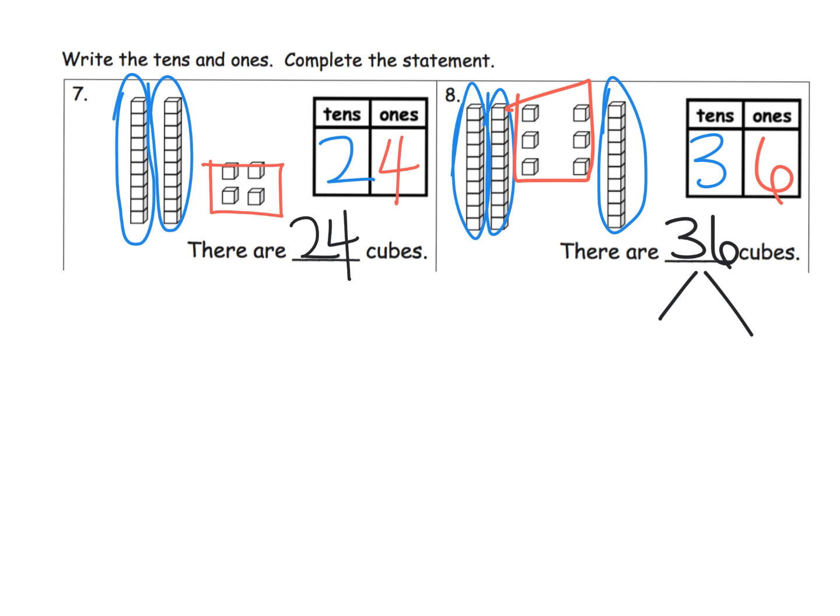Again, we want students to see that 3 as 30 plus 6. We want them to see that 3 as three rods. We want them to see this 3 as three tens, and we want them to see this 3 as 30. Multiple representations is really what we want our students to see.